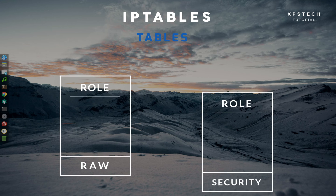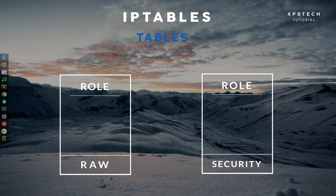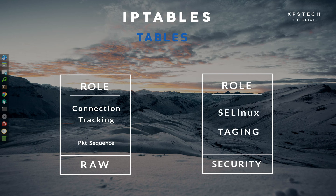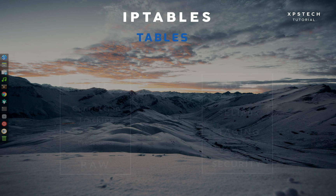The other two tables are RAW and Security. Both of these tables have just one function each. The RAW table is basically used for connection tracking — it provides a mechanism for marking packets to view them as part of an ongoing connection or session. The Security table is used to set internal SELinux security context marks on packets, which will affect how SELinux or other systems that can interpret SELinux security contexts handle those packets. These are not the main tables, so you don't need to worry much about them.